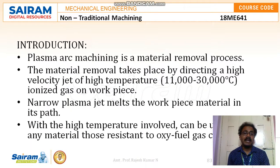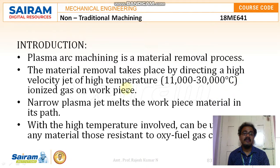Plasma arc machining is a material removal process where material removal takes place by directing a high velocity jet of high temperature ionized gas — 11,000 to 30,000 degree Celsius — on the workpiece. It is basically a thermal process with the help of electrical energy, where we convert electrical energy into a thermal gas of temperature 11,000 to 30,000 degree Celsius, and then a narrow plasma jet melts the workpiece material in its path.